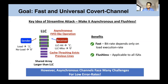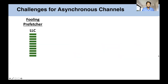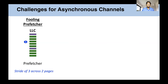However, such an asynchronous channel still has many challenges to ensure low error rates. The first challenge is fooling the prefetcher. Because Streamline uses a sequence of addresses, these can be learned by the prefetcher that can preemptively install addresses into the LLC and disrupt the channel. To address this, Streamline systematically devises an irregular pattern of accesses that fools the prefetcher and prevents any such preemptive installs.